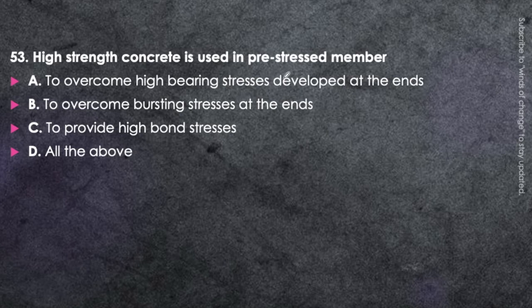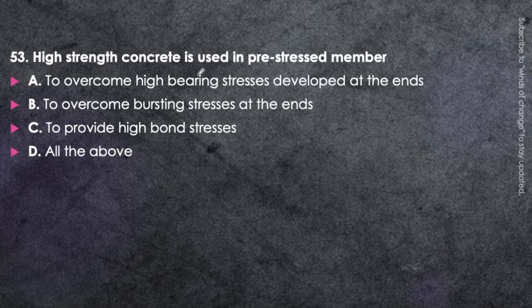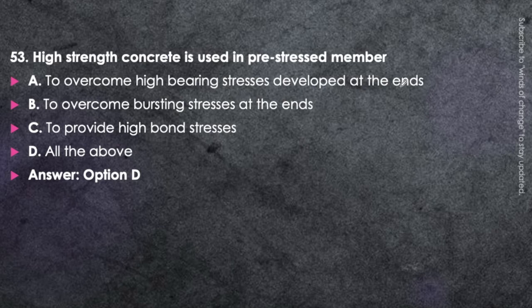Next question: High strength concrete is used in pre-stressed members to overcome high bearing stresses at the ends, to overcome bursting stresses at the ends, and to provide high bond stresses with the steel — all of the above is correct. Pre-stressing load is applied from the ends, so high bearing stresses and bursting stresses develop there, making high strength concrete necessary.